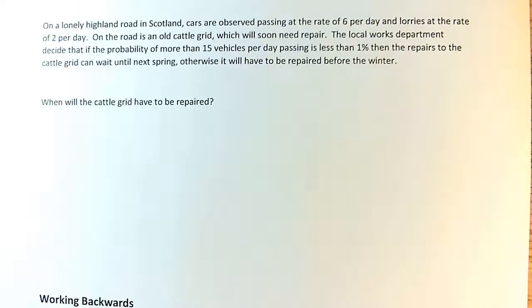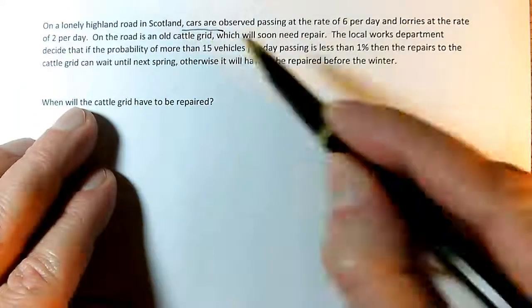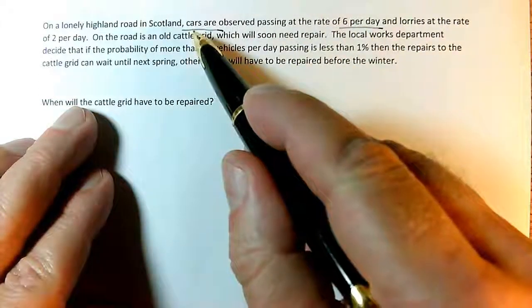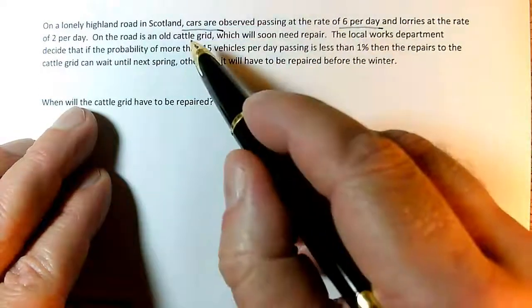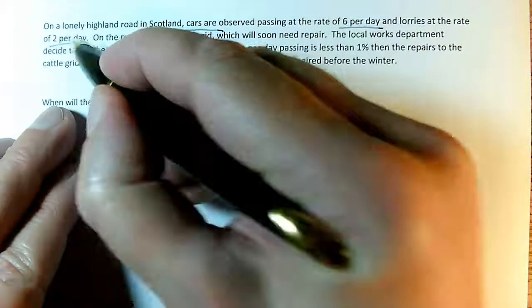Here's an in-context question. I've got to read all my words. We've got cars at six per day. I'm counting the number of cars in a day, so that's events in a fixed time. Lorries at the rate of two per day.